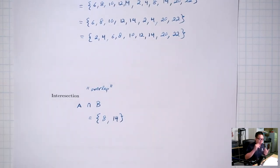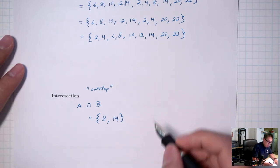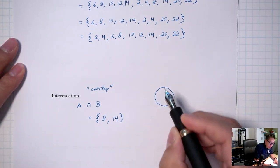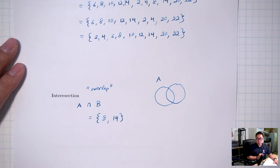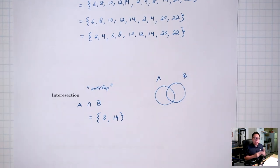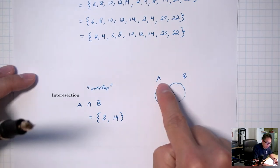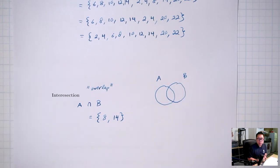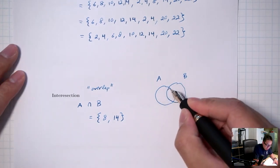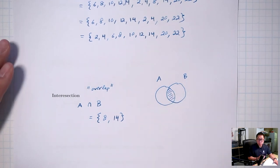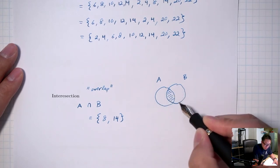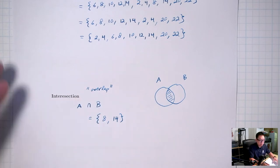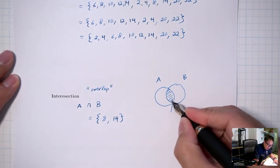For the intersection, sometimes we denote this using a picture. Say that's set A — that circle — and that second circle is set B. The intersection will be the region that's in both circles at the same time: what region is in circle A and also circle B. Notice that this area in the middle is in both circles — it's in circle A and also in circle B. That's what I mean by the overlap. The overlapping part is the intersection.